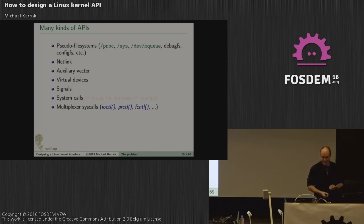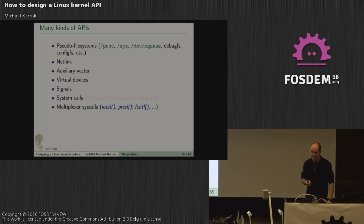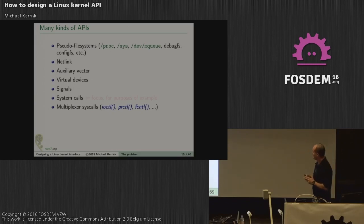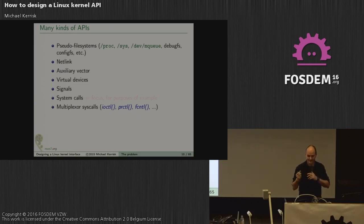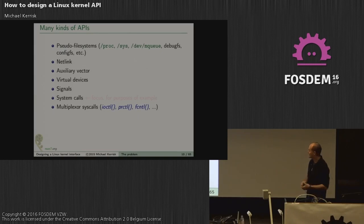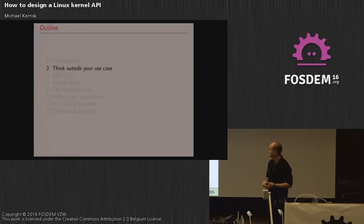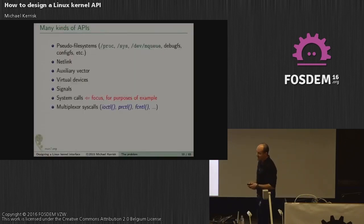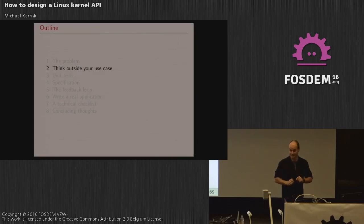When it comes to APIs, there are a lot of different kinds in the Linux kernel: pseudo file systems, netlink, virtual devices, signals, system calls, multiplexer system calls — things like IOCTL and PRCTL — these ways of sneaking things in so they're not a new system call, but really they are. We'll just call it an IOCTL and get less review and maybe less resistance. Mainly I'm going to talk about system calls for my examples.